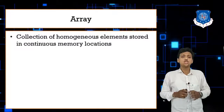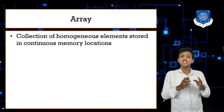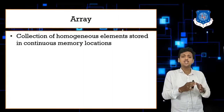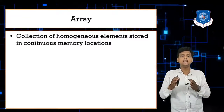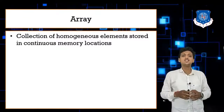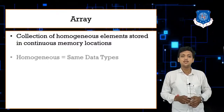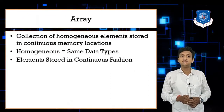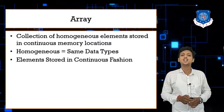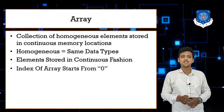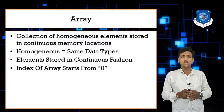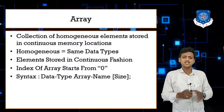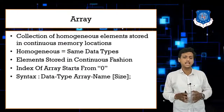An array is a collection of homogeneous elements where each and every element is stored in sequential memory. When elements are stored in a sequential and continuous form in memory, that is known as an array. Homogeneous means the same type of elements, stored in a continuous fashion. In an array, the index starts from 0.